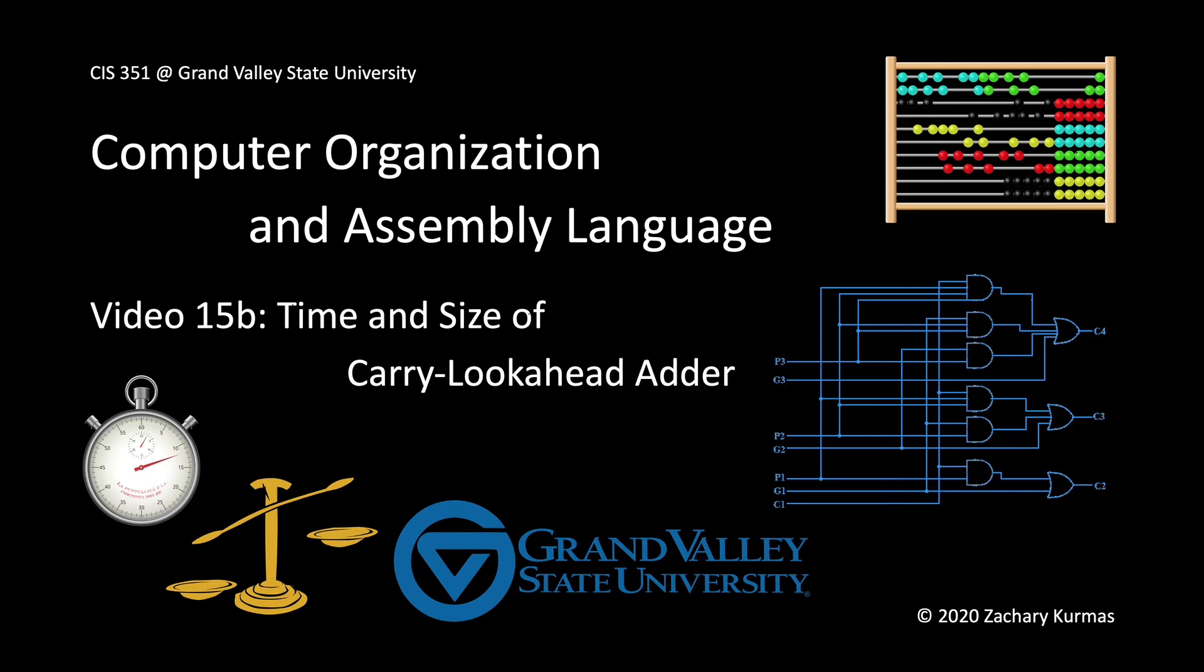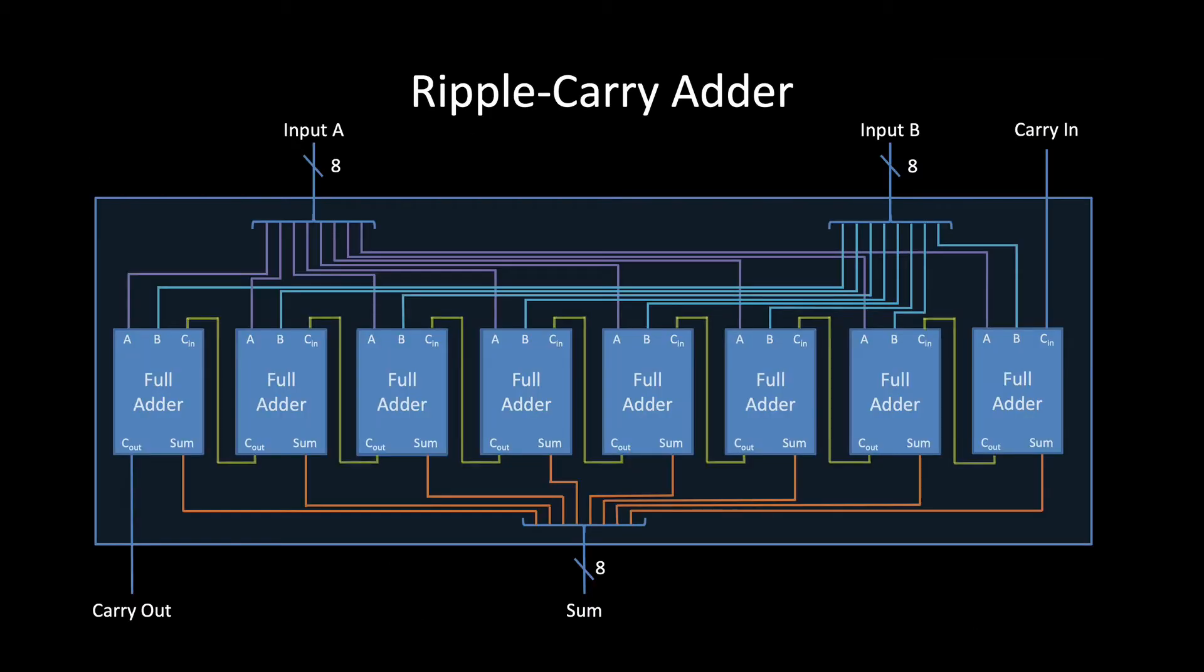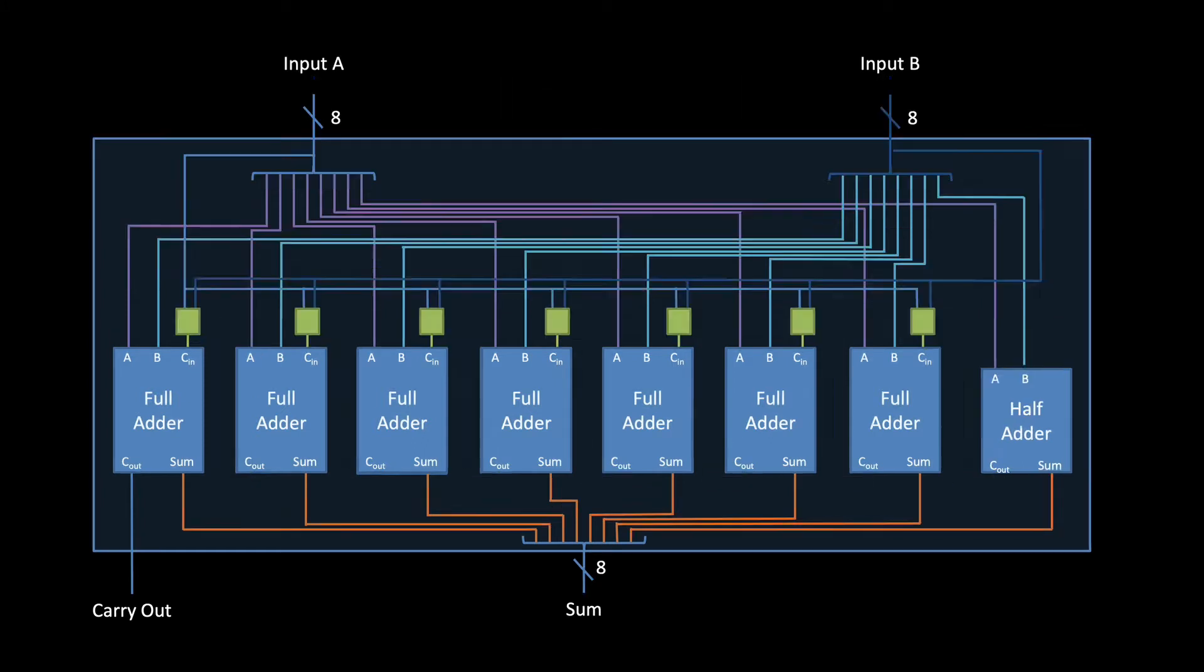As a quick review, the main approach of a carry lookahead adder is to replace the ripple carry adder's chain of carries with a carry lookahead sub-circuit for each full adder. That's these green boxes here. These carry lookahead sub-circuits can all run in parallel, which, as we'll soon see, is what allows the propagation delay to grow slower than O(n).